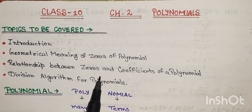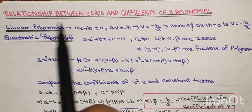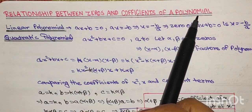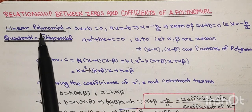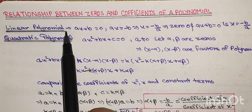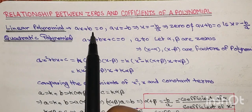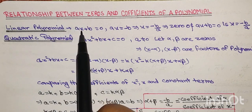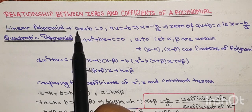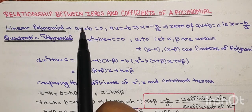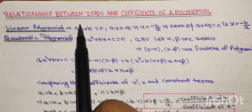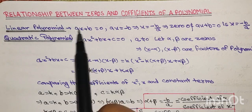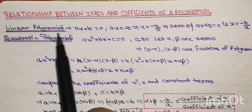So let's start. Today's topic is relationship between zeros and coefficients of a polynomial and Exercise 2.2. First, linear polynomial kya hota hai? ax plus b equal to zero, where the coefficient a is not equal to zero. The variable's highest power is 1, so this type of polynomial is known as linear polynomial.